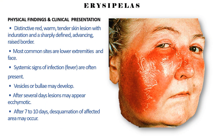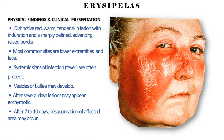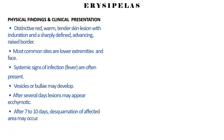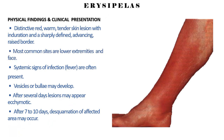Physical findings and clinical presentation: distinctive red, warm, tender skin lesion with induration and a sharply defined, advancing, raised border. Most common sites are lower extremities and face. Systemic signs of infection and fever are often present. Vesicles or bullae may develop. After several days, lesions may appear ecchymotic. After 7 to 10 days, desquamation of the affected area may occur.